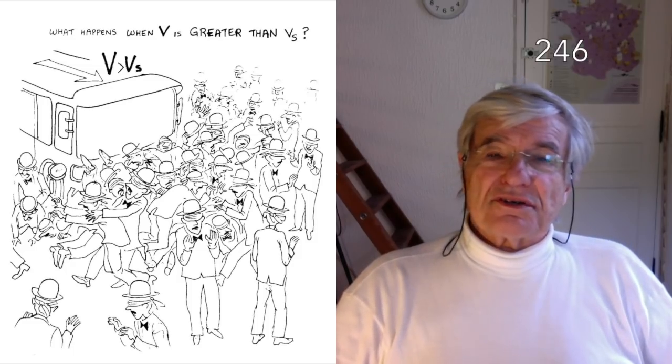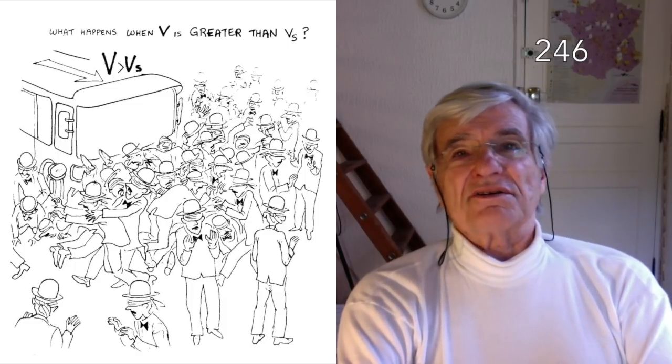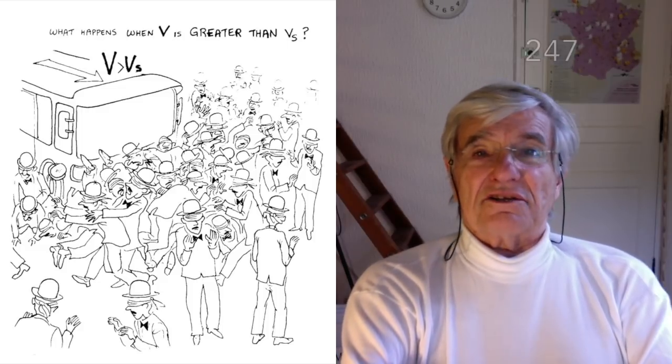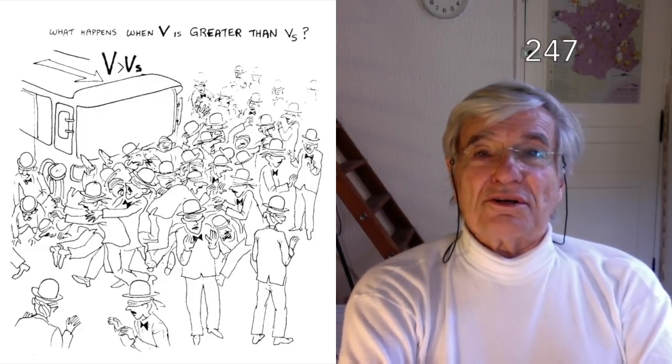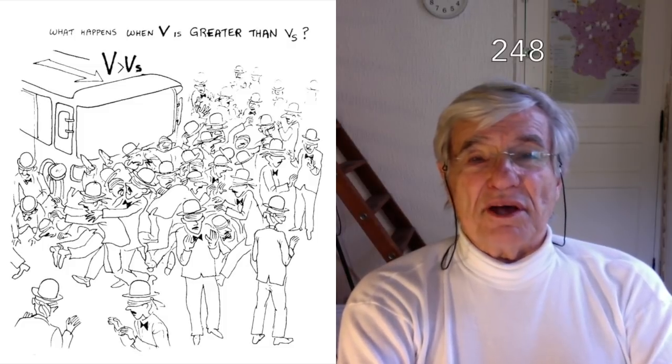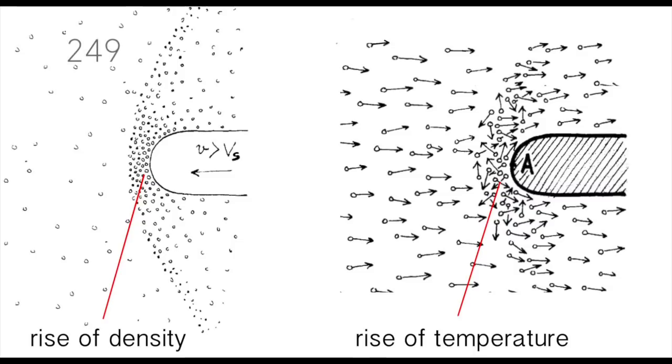Now, if the bus runs into the crowd at a velocity which is higher than the walking velocity, as the people accumulate, they tend to run to escape the bus. It's an image for supersonic flight and shows how the density of the gas is increased behind a shock wave and why the thermal velocity is increased too.